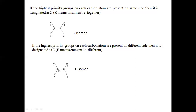If the highest priority group on the first carbon — bromine — and the highest priority group on the next carbon — chlorine — are both present on opposite sides of the double bond, then it is called the E isomer. E means trans, and E comes from the German word Entgegen, meaning 'opposite.' So Z means cis and E means trans.